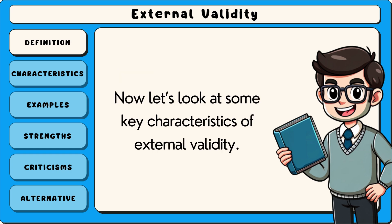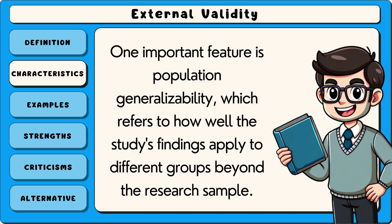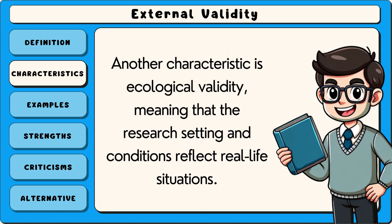Now let's look at some key characteristics of external validity. External validity has several defining characteristics. One important feature is population generalisability, which refers to how well the study's findings apply to different groups beyond the research sample. Another characteristic is ecological validity, meaning that the research setting and conditions reflect real-life situations.